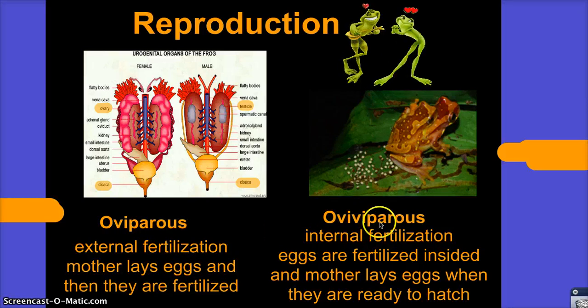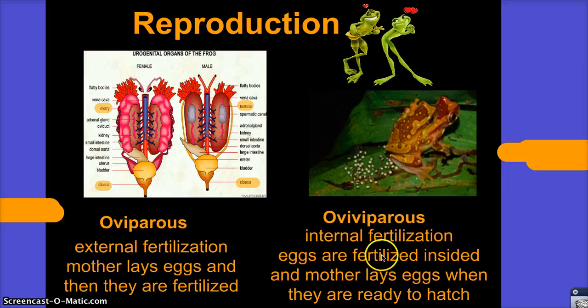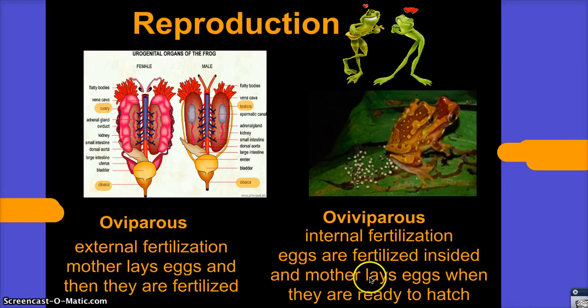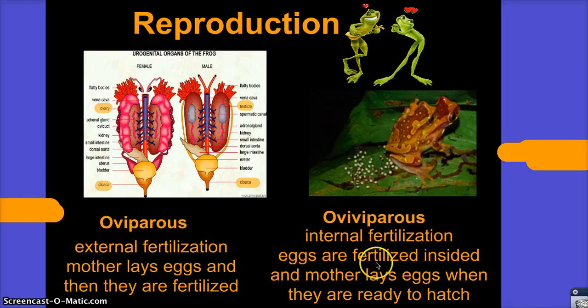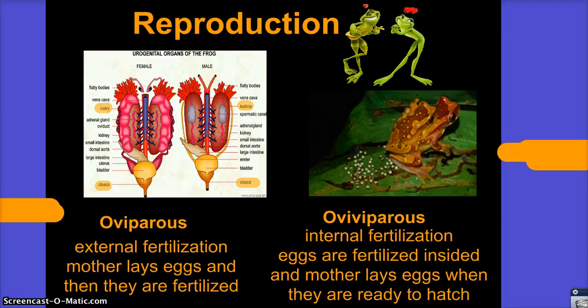In the other type, the male frog will fertilize the egg inside of the female. The mother will then lay eggs right after, and the yolk will provide the nourishment.